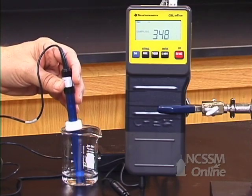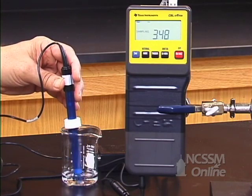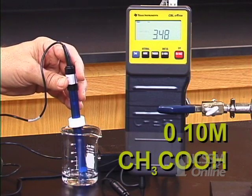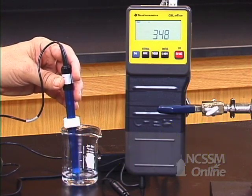For comparison to be used in our next solution, I have a 0.1 molar solution of acetic acid. We have a pH of about 3.48.